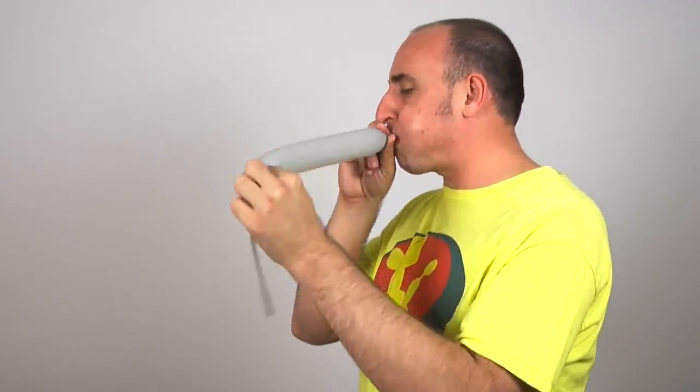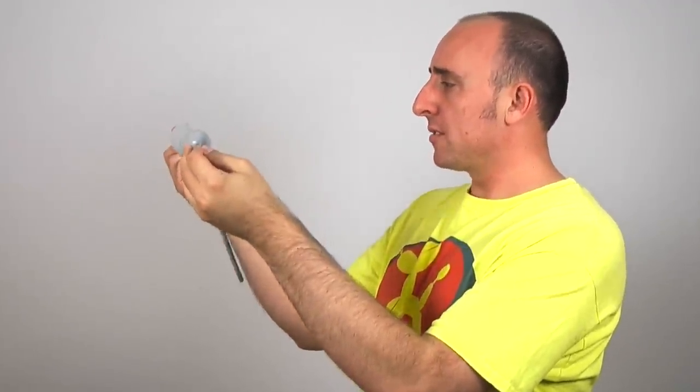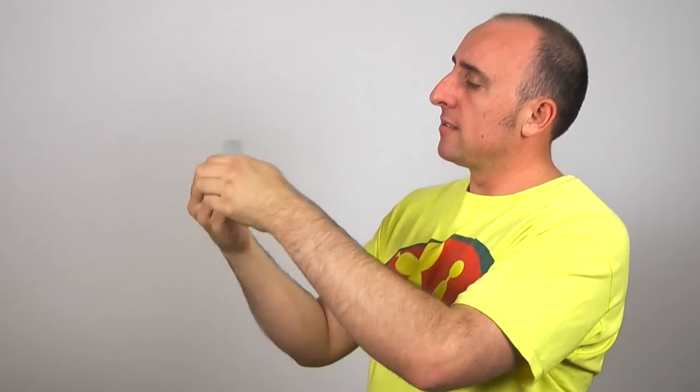First, let's start with our reel. Get your gray 260 out, and you want to inflate it about five inches. Once you have about five inches, tie it, give it a squeeze, and a stretch.